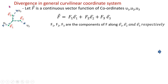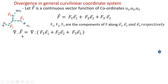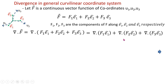Now we are going to derive the expression for divergence in the general curvilinear coordinate system. Consider vector function f-bar as a continuous vector function of coordinates u1, u2, u3 in general curvilinear coordinates. Let f-bar equal f1 e1-hat plus f2 e2-hat plus f3 e3-hat, where f1 e1-hat is the component along the u1 curve, and f2 e2-hat is the component along the u2 curve. Then del dot f-bar equals del dot (f1 e1-hat) plus del dot (f2 e2-hat) plus del dot (f3 e3-hat).